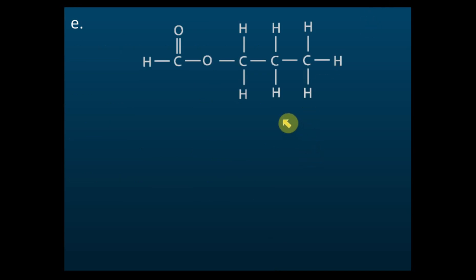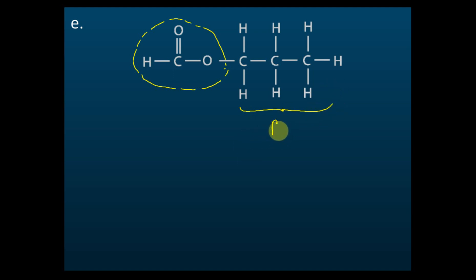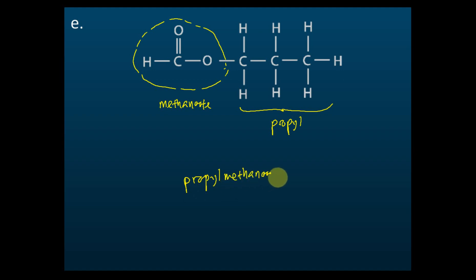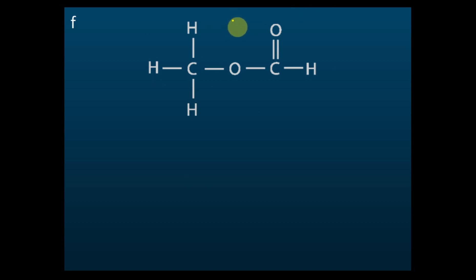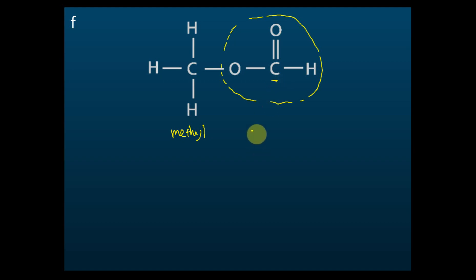What's the name of this ester? Remember, this part with COO is from the carboxylic acid. And this one has three carbons, so it is propyl. This is methanate — one carbon — so the name is propyl methanoate. For the next one, this is from the carboxylic acid with COO. This one is methyl — just one carbon. And this one also is one carbon, so methanoate. The name is methyl methanoate.